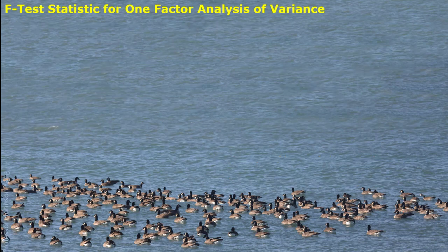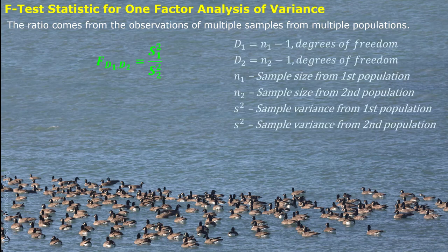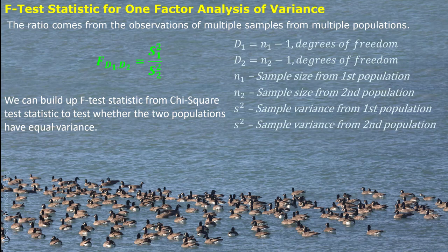When we consider two populations from a chi-square random variable, we can build up another random variable, F, also called the F test statistic, simply by dividing one sample variance by another sample variance, where two independent samples come from two independent populations. The F test statistic carries two degrees of freedom: d1 comes from the sample from the first population, and d2 from the sample from the second population. We use this F test statistic to test whether two populations have equal variance, and the hypothesis model can be two-sided or one-sided.